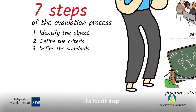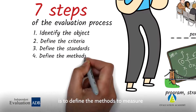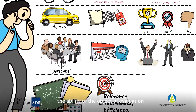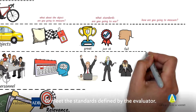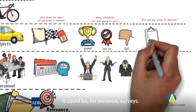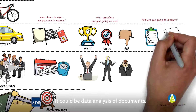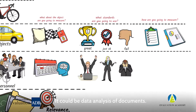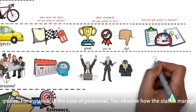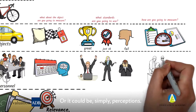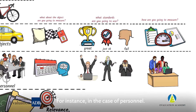The fourth step is to define the methods to measure the ability of the object of evaluation to meet the standards defined by the evaluator. It could be, for instance, surveys, data analysis of documents, or pure measurement with gadgets that measure gas consumption or speed. Or it could be simply perceptions — for instance, in the case of personnel, you observe how the staff is managing soft skills, such as how they relate to other people.